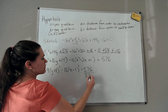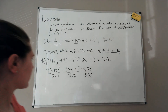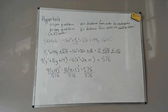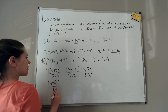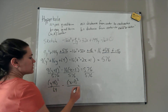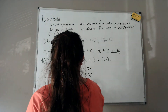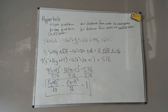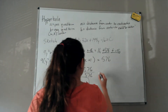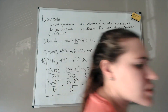We write the factored forms as (y + 8)² and (x − 1)², set equal to 576. Dividing everything by 576: (y + 8)²/64 − (x − 1)²/36 = 1. This is the hyperbola in standard form. The center is (1, −8).